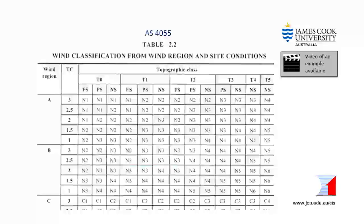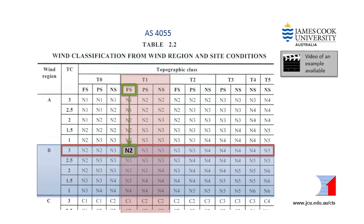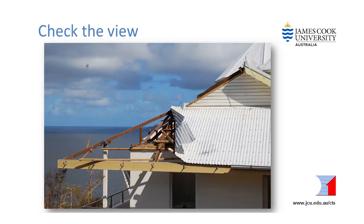The final step is to use all of the information to look up the wind classification in Table 2.2. Select the wind region and the row for the terrain category. The topographic class tells you which block of columns to use and the shielding narrows it down to one column. The selected column and row intersect at the wind classification for that particular site. In AS4055, the worst terrain category, steepest slope and most open shielding can all be in different directions. Notice that for the steeper topographic classifications, that is T3 and above, there is no full shielding because the wind can blow over the top of neighbouring houses. More exposed sites have higher wind classifications and they also have great views — the better the view, the higher the wind classification. So when you're on a site, check the view.